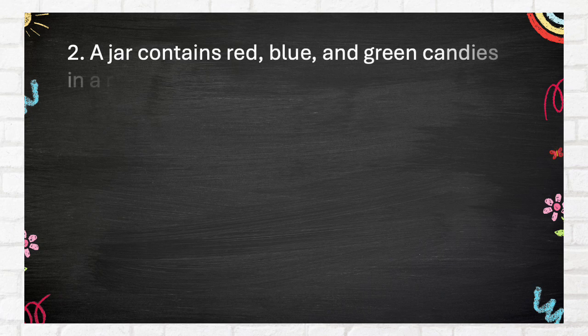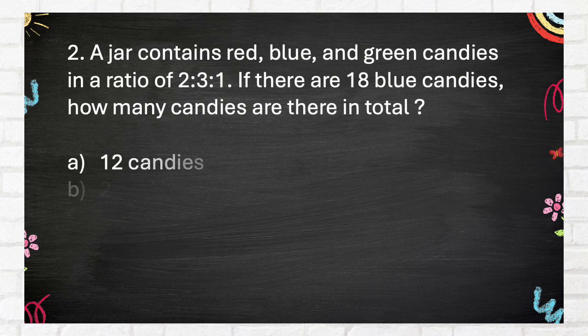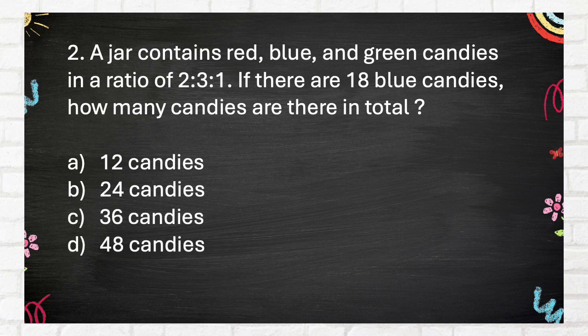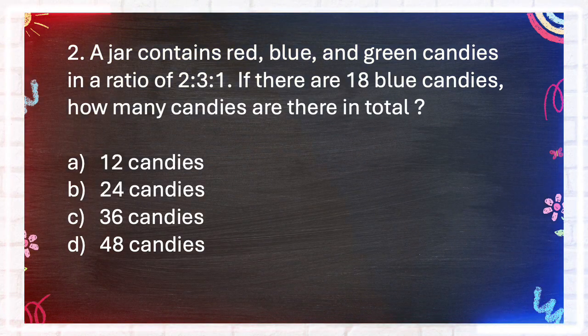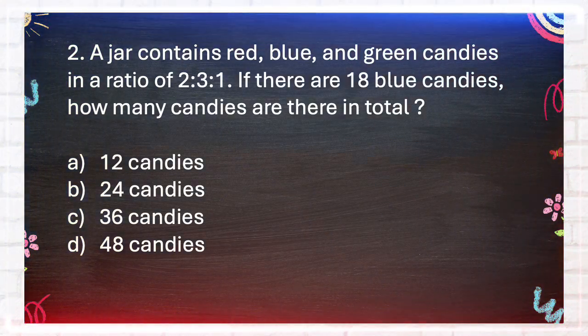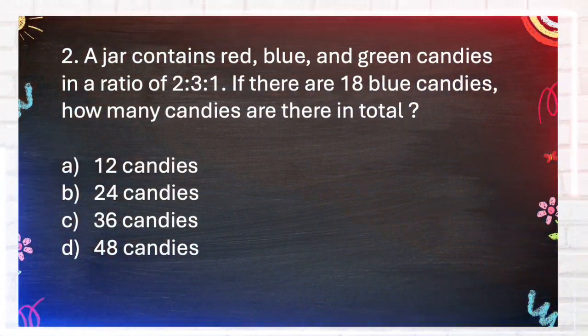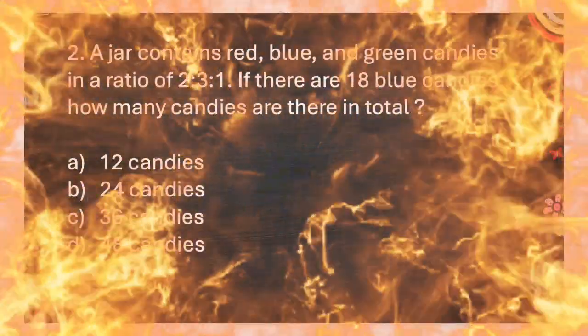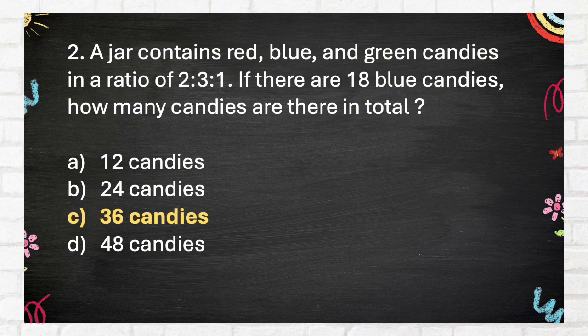Number 2. A jar contains red, blue, and green candies in a ratio of 2 to 3 to 1. If there are 18 blue candies, how many candies are there in total? A. Twelve candies. B. Twenty-four candies. C. Thirty-six candies. D. Forty-eight candies. The correct answer is C, thirty-six candies.